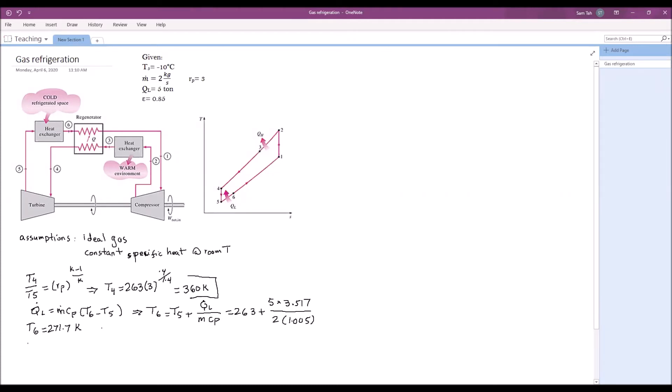Now, for the regenerator, we can write a couple of equations. One is T1 minus T6 equals T3 minus T4. That's the heat balance between the two sides of the heat exchanger. In this one, we notice that we don't know T1 and T3. So two unknowns. We need another equation.